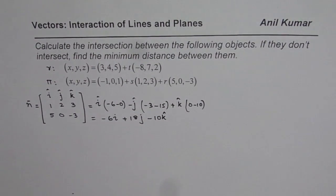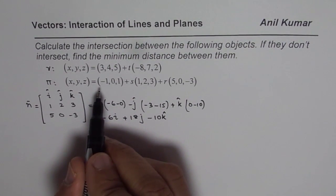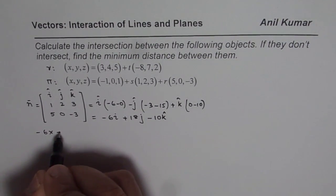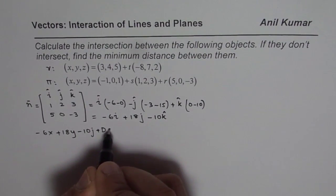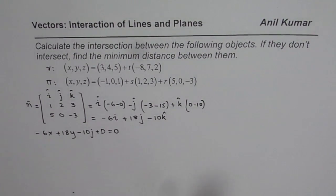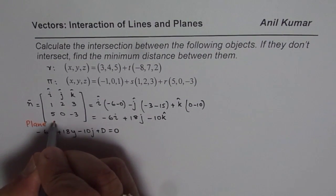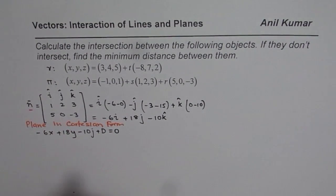So the normal vector is (-6, 18, -10). From this normal vector, we can find the plane equation in Cartesian form. We know a point on the plane, so we write: -6x + 18y - 10z + d = 0.